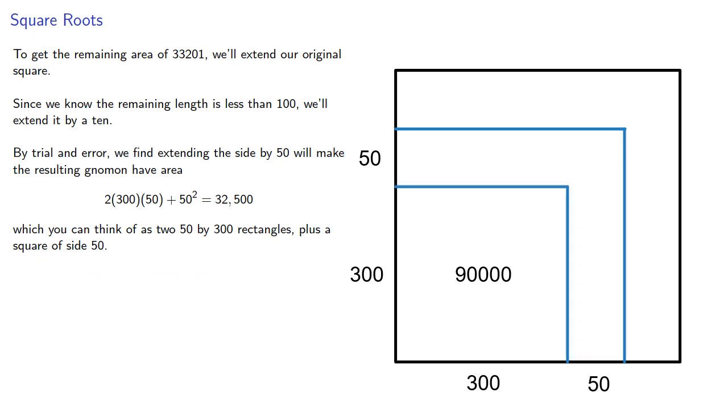Again, if it's not written down, it didn't happen. Let's label the area of the gnomon. We wanted to get the remaining area 33,201; we got 32,500, so now the remaining area is 701.